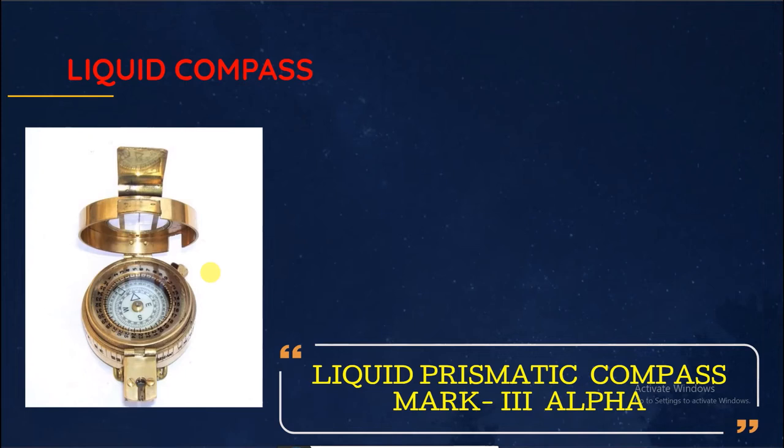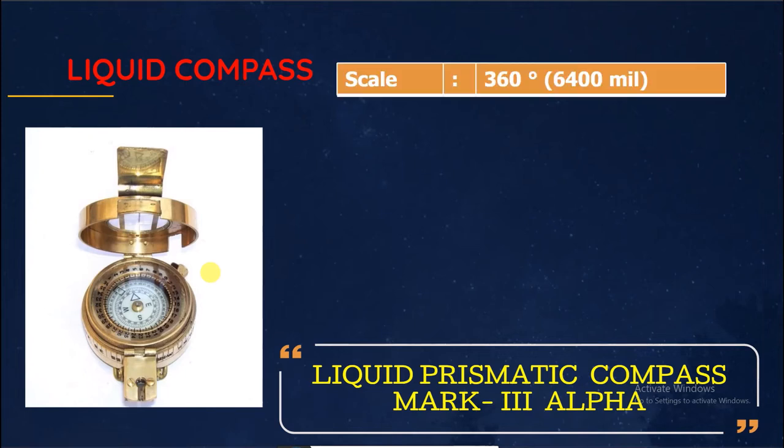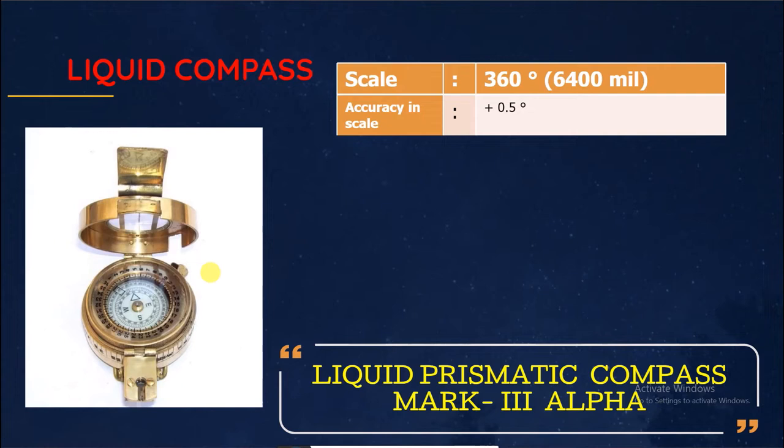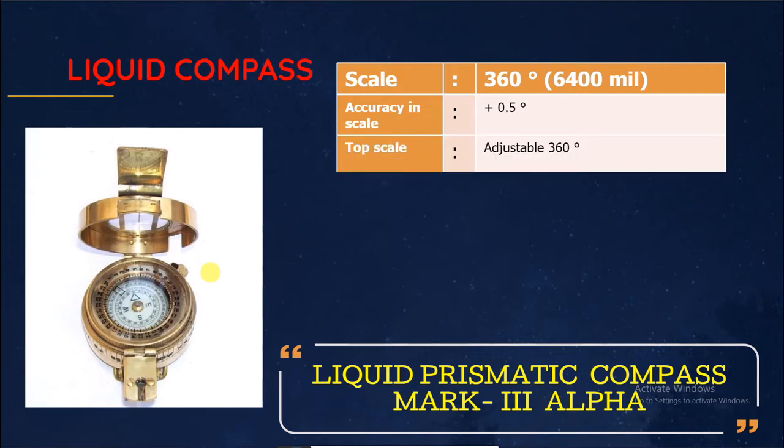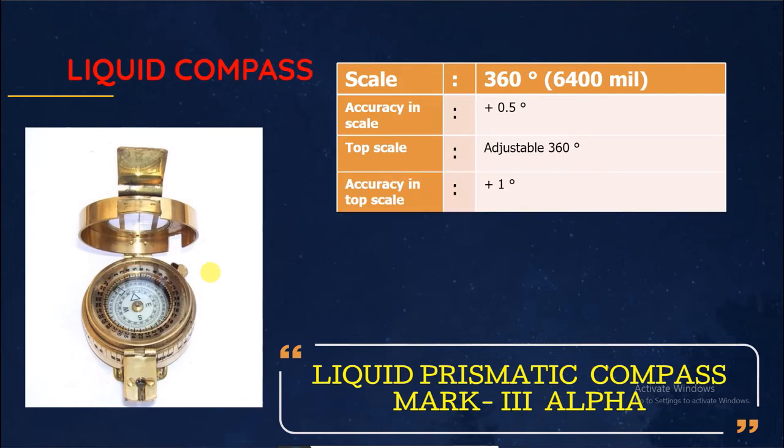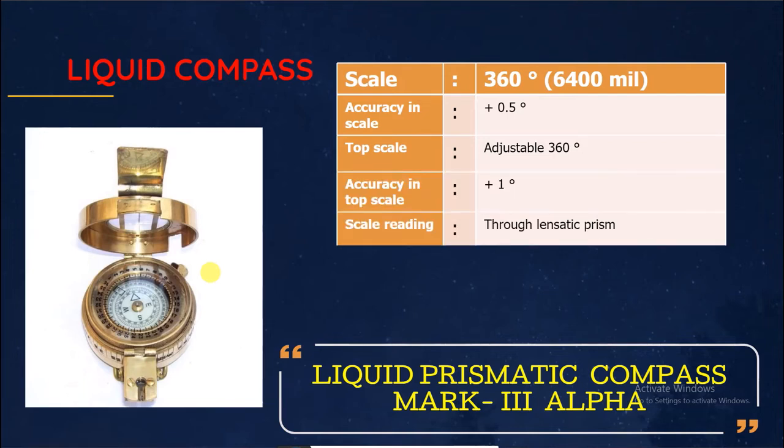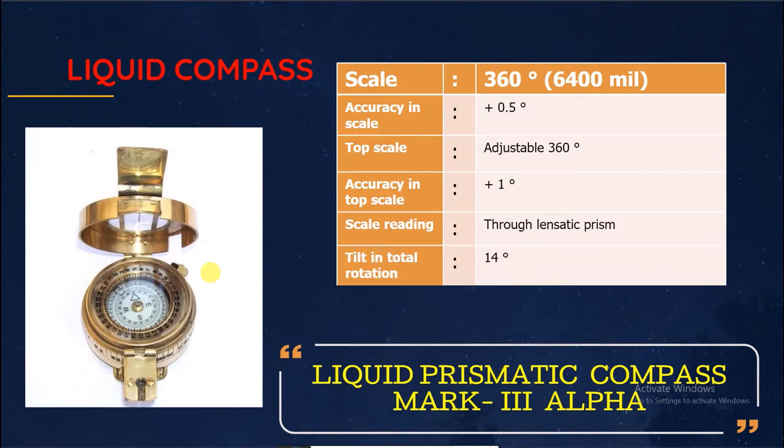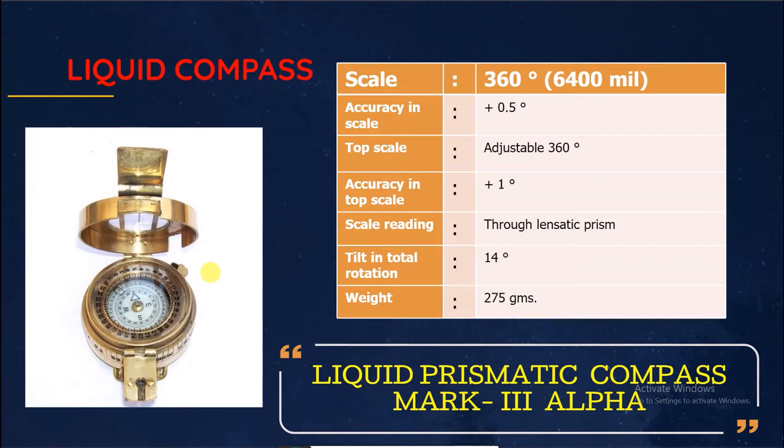Now we discuss about specifications. Scale is 360 degrees, accuracy in angle is 0.5, top scale is adjusted 360 degrees. Accuracy in top scale is plus 1 degree. Scale of reading is through prism, tilt in total rotation is 14 degrees, and finally weight is 275 grams. This is all the specifications of liquid compass.